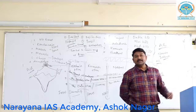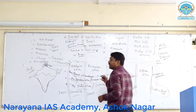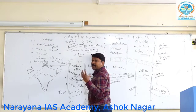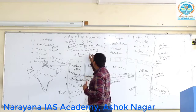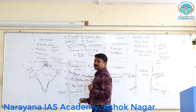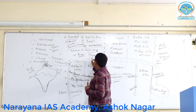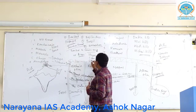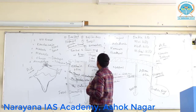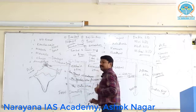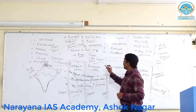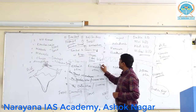Other minor, smaller tributaries to the Indus are Shyok (S-H-Y-O-K), Lidar, Dras, Gilgit. All these rivers are present here along with other rivers like Kishanganga.